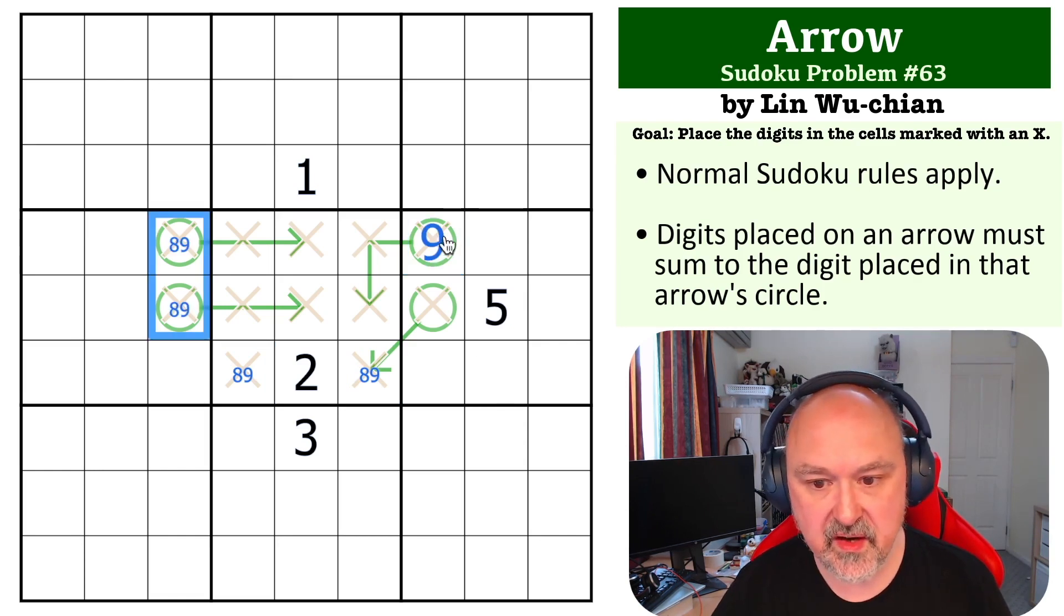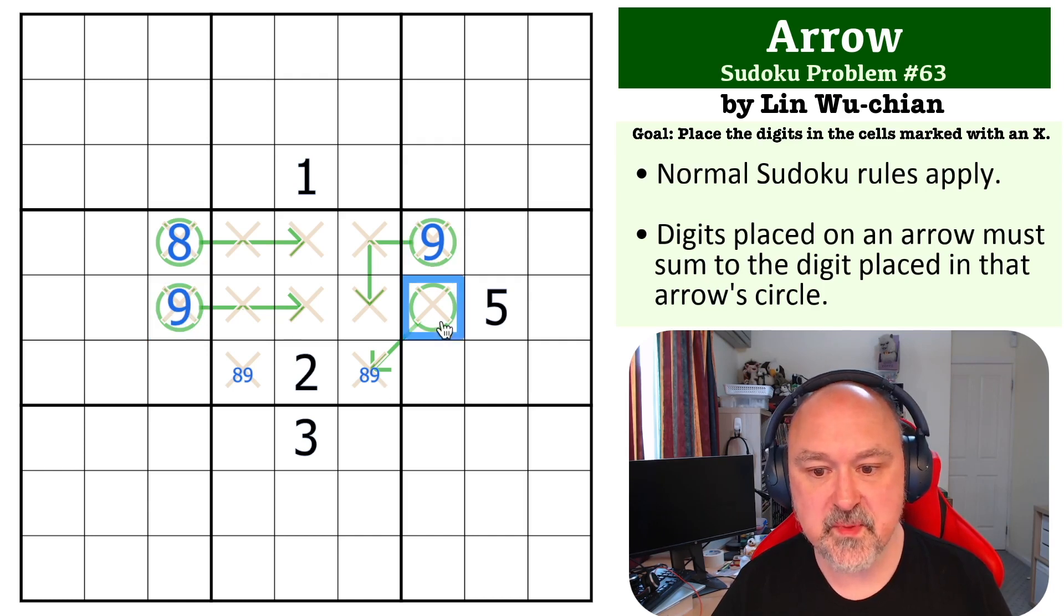This was forced by this being a nine and these being eight-nine. That nine makes this eight and this nine. Now this being a nine means these two can't be nine because these are the same digit. These become eight, this becomes nine.